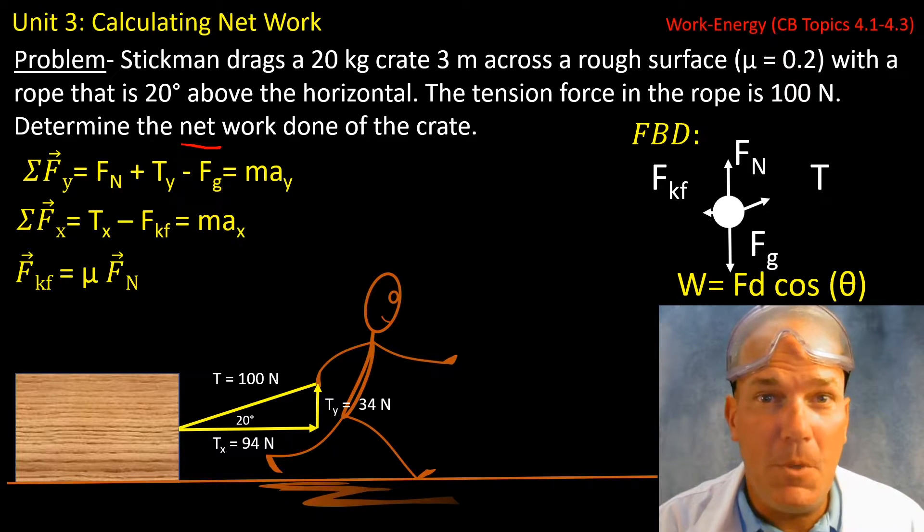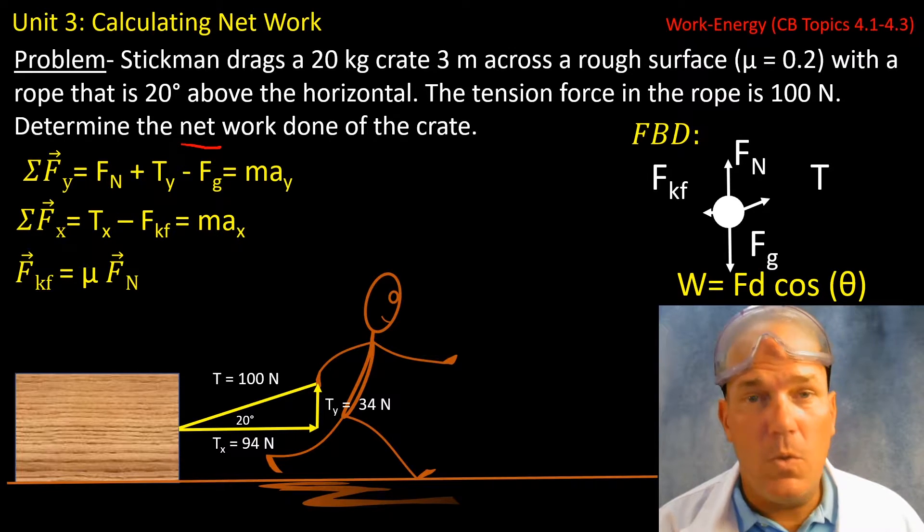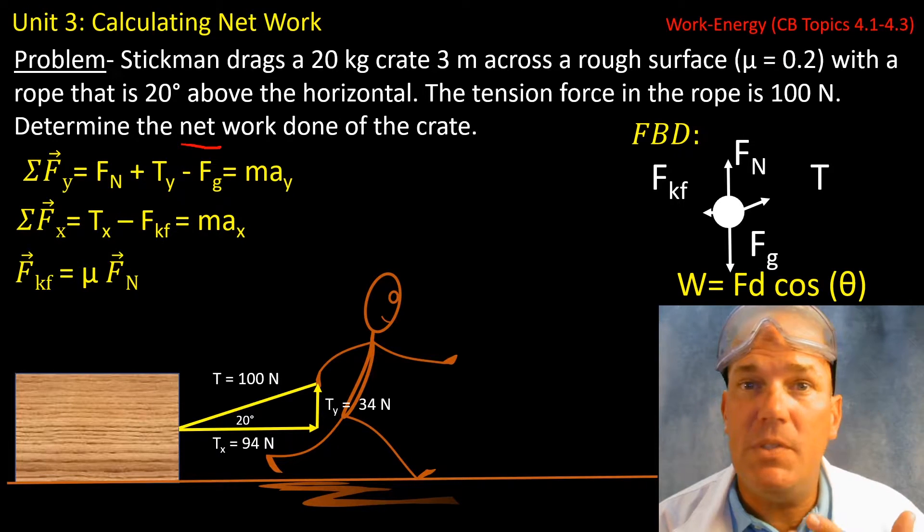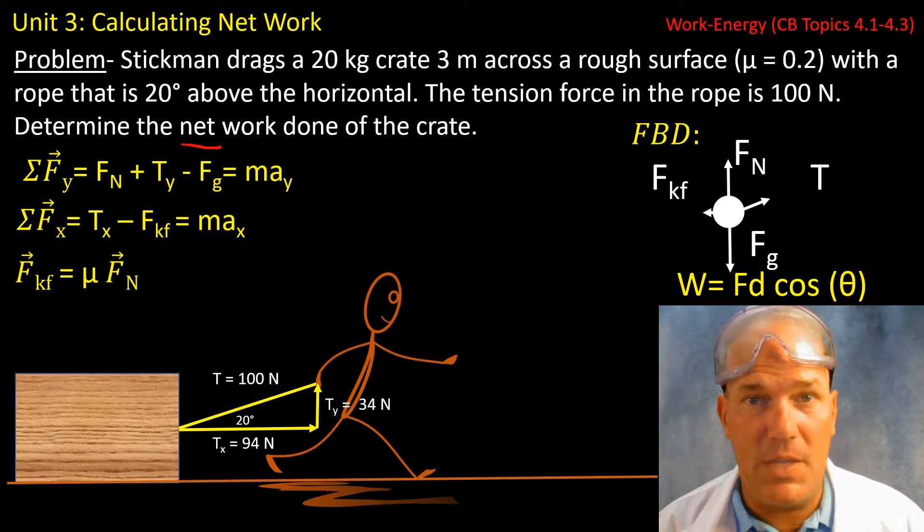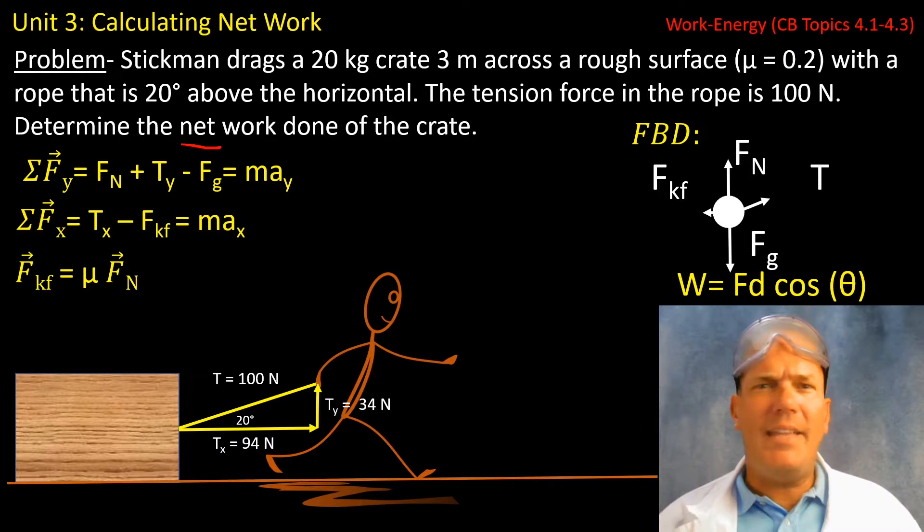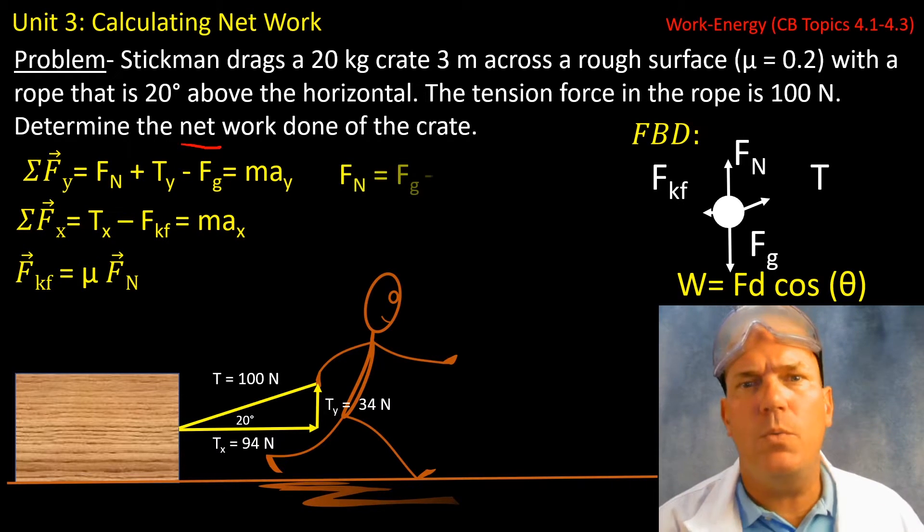Force normal is normally mass times gravity. Well, on a horizontal surface, mass times gravity would be 20 kilograms times 10 meters per second per second, which gives us 200 newtons. But that's not the case here. We have another force acting in the vertical direction.